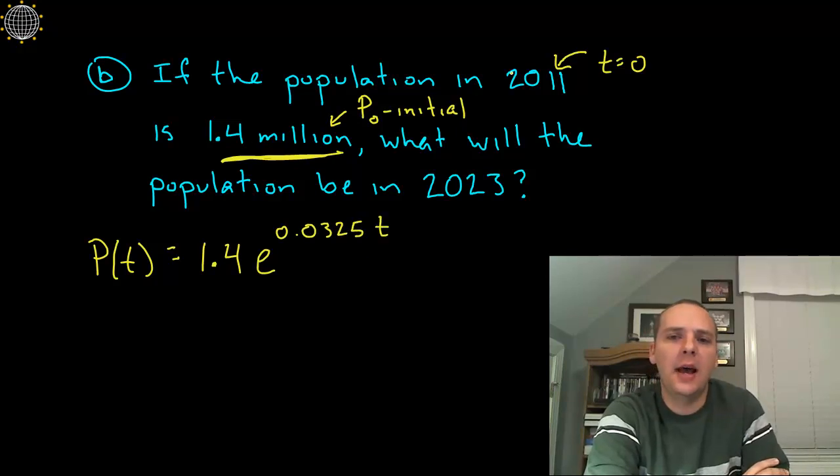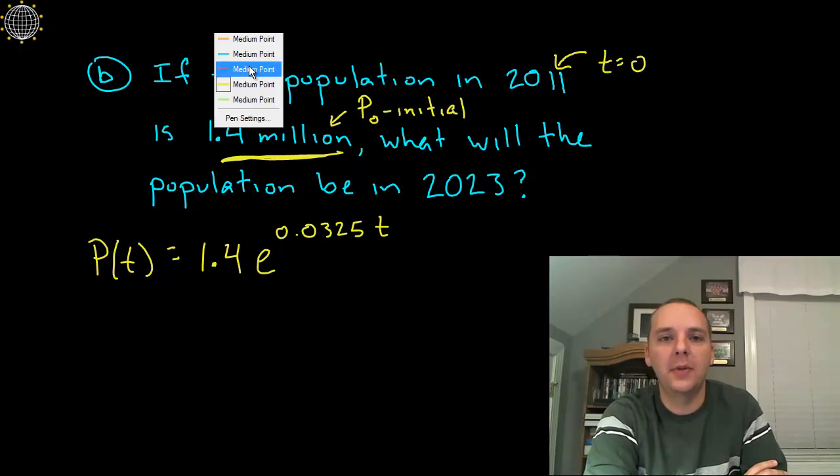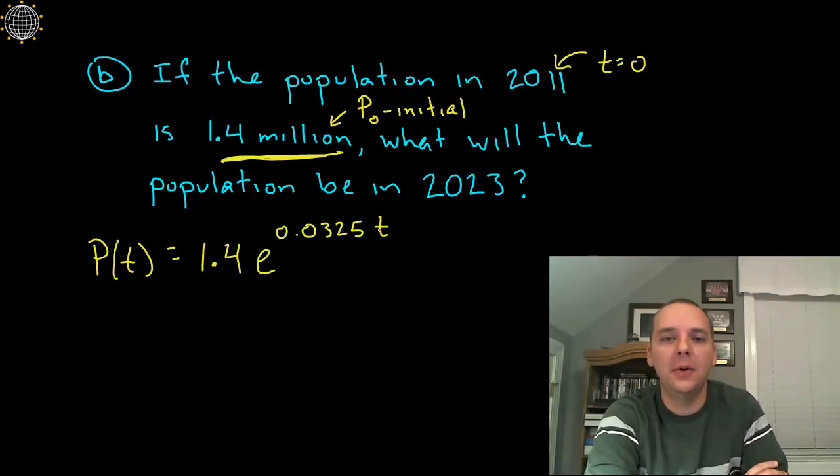Alright, now you might say, well Devin, how do you know this corresponds to an initial population of 1.4 million? Well, we'll just check this out for a minute. If you let T be 0, just run through the math. 0 times this decimal would be 0. E to the 0 is 1. And 1.4 times 1 is 1.4. So a time of 0 equates to a population of 1.4.